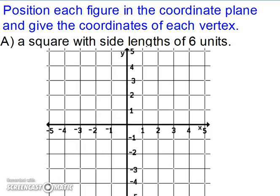Let's look at positioning each figure in the coordinate plane and give the coordinates of each vertex. When we're looking at this one here, we have a square with side lengths of 6 units. Notice, it's not going to fit in the first quadrant.